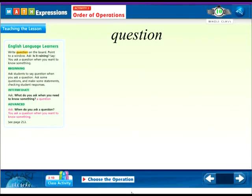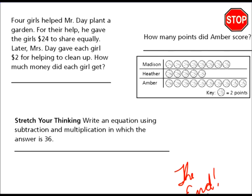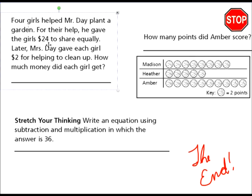I want you to remember that a question, when we have a question on a test, why do we need that question? A question helps us to know something. We want to know the answer. When you see a question, don't get frustrated - just realize that it's helping you understand. And here's the end. Got three extra problems for you to do: one with Mr. Day planting a garden, one writing an equation using multiplication and subtraction which the answer is 36, and how many points did Amber score? That's the end of our lesson today. Thank you and good night.